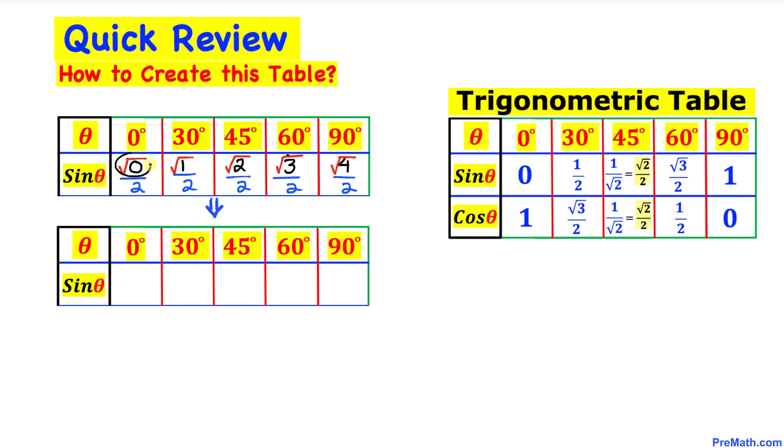Square root of 0 is same as 0 divided by 2 is 0, and square root of 1 is 1, so this could be written as 1 divided by 2. This one we are going to write as it is, square root of 2 divided by 2, and this one likewise, square root of 3 divided by 2. Here square root of 4 is same as 2 and then divided by 2, which is same as 1.